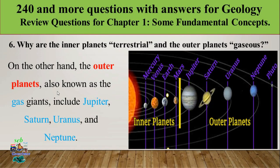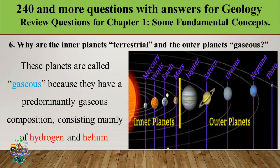On the other hand, the outer planets — also known as the gaseous planets — include Jupiter, Saturn, Uranus, and Neptune. These outer planets are far away from the Sun. They are called gaseous because they have a predominantly gaseous composition consisting mainly of hydrogen and helium.